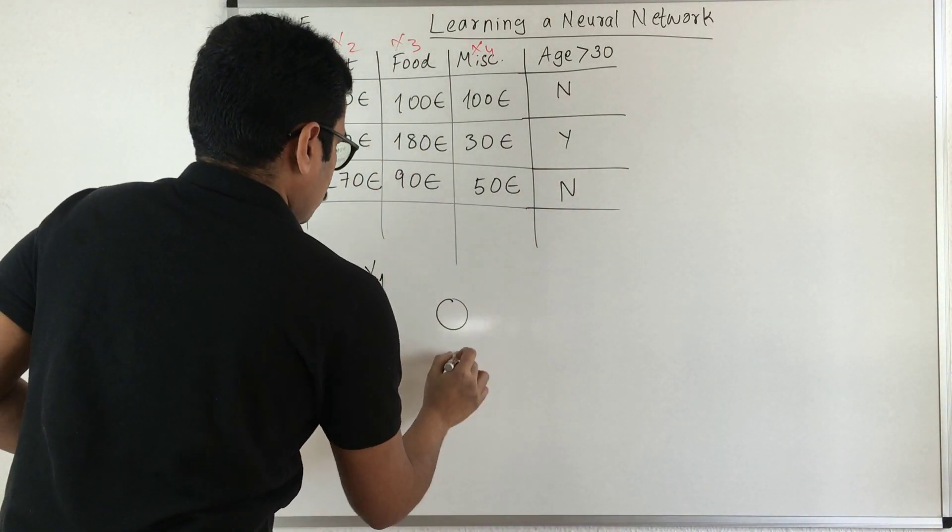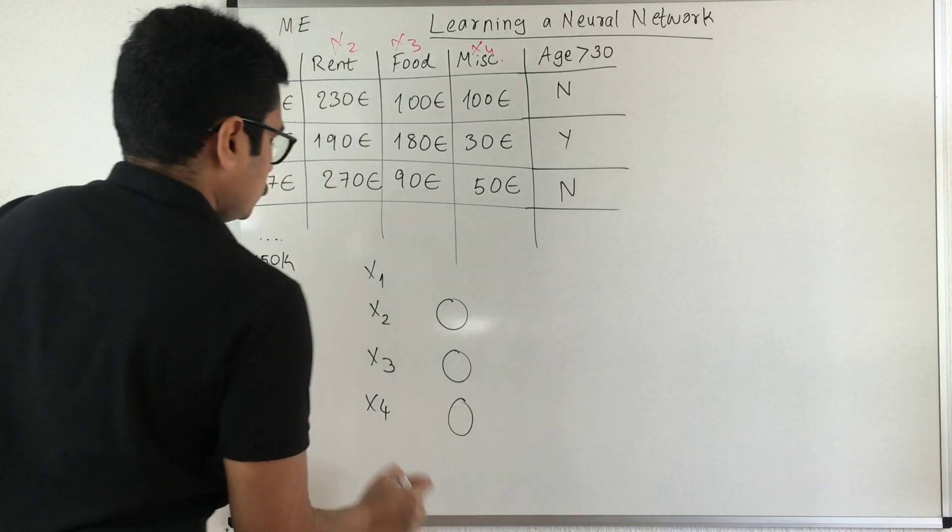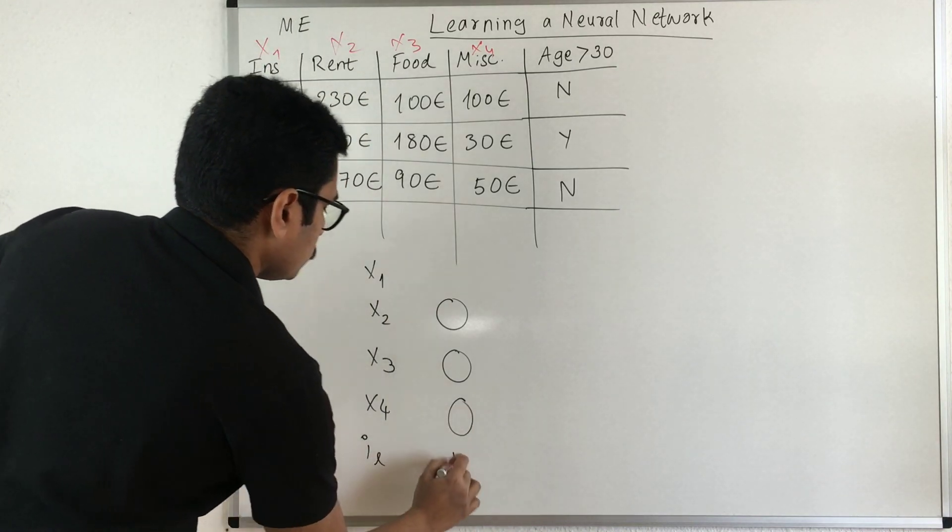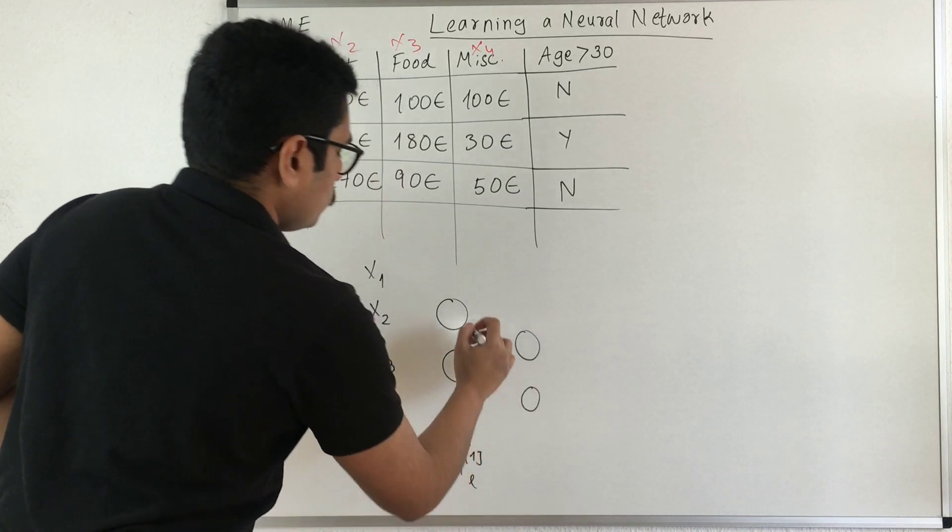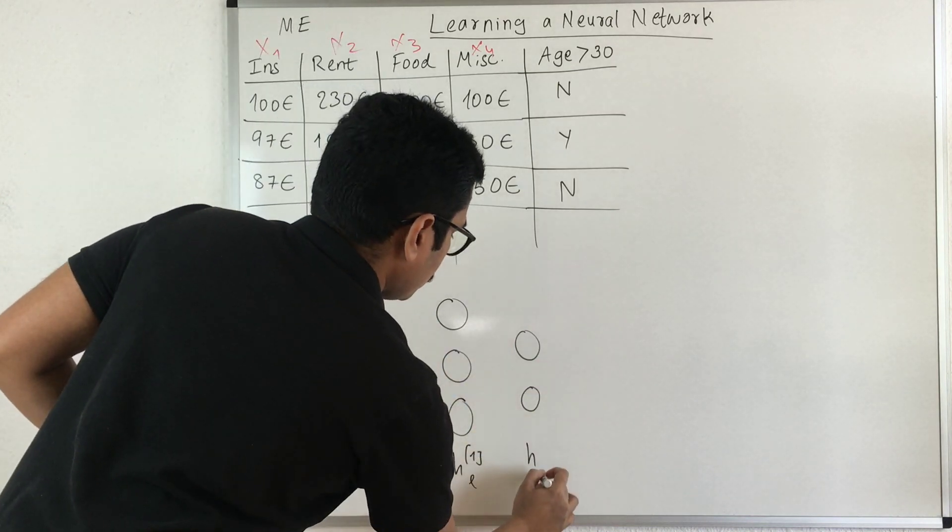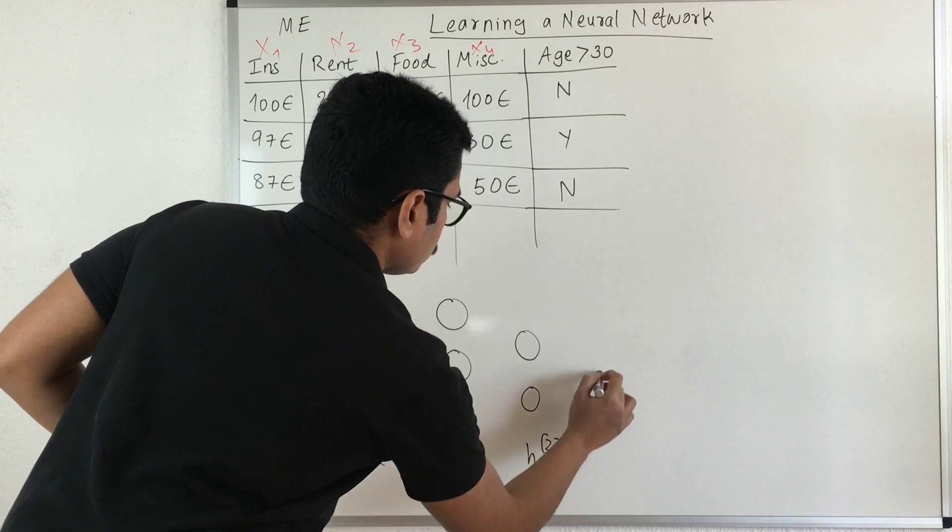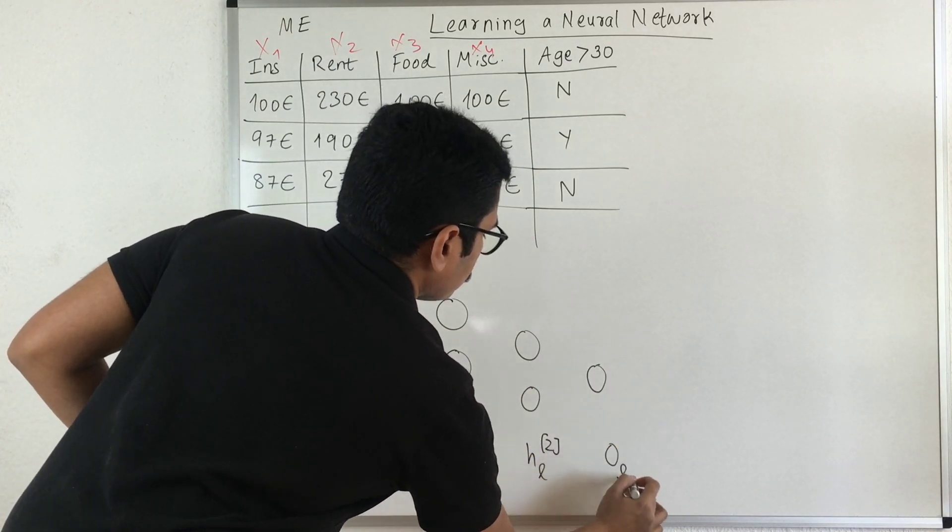Say for instance, I have my first hidden layer. So this is my input layer, this is my hidden layer. In that I have two, three units, and in the second hidden layer I have two units. In the final output layer I have one unit.